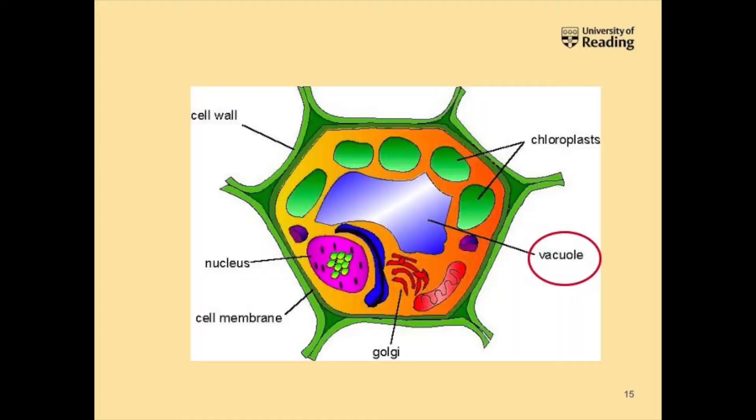Why does your apple not go brown in the fruit bowl? That's because polyphenol oxidase is stored within the cells of the plant in what we call the vacuole, which you can see in the diagram on the screen. When the fruit or veg becomes damaged — for example, when it falls off a tree, you cut it open, or it gets eaten by an insect — the cell can become exposed to oxygen.